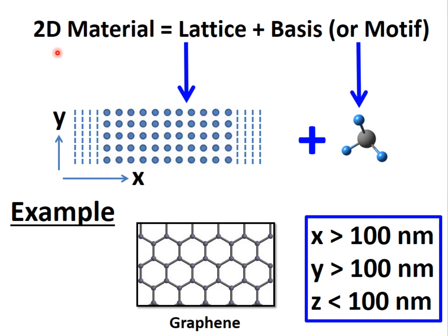In 2D materials, the lattice is a plane of lattice points that extends in the X and Y directions.